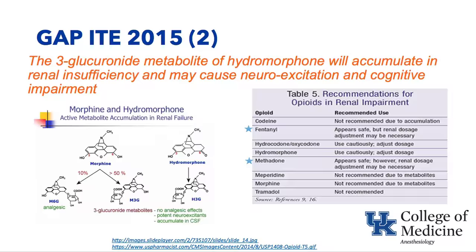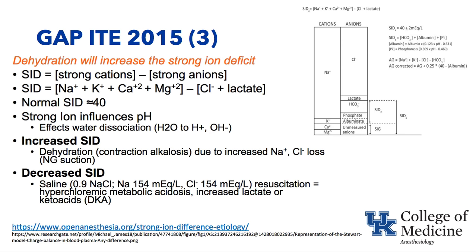The third gap from the in-training exam in 2015 was that dehydration will increase the strong ion difference. The strong ion difference is defined as the difference between the strong cations — positively charged — and the strong anions — negatively charged. Strong ion difference equals sodium plus potassium plus calcium plus magnesium, minus the anions chloride and lactate, and some that are not measured. The difference between those is approximately 40.